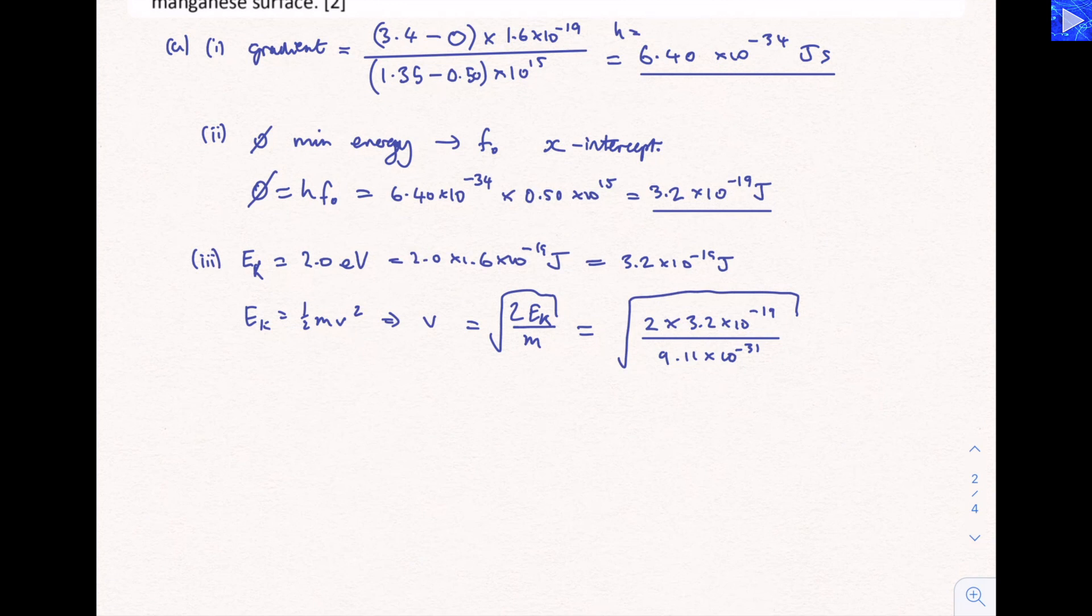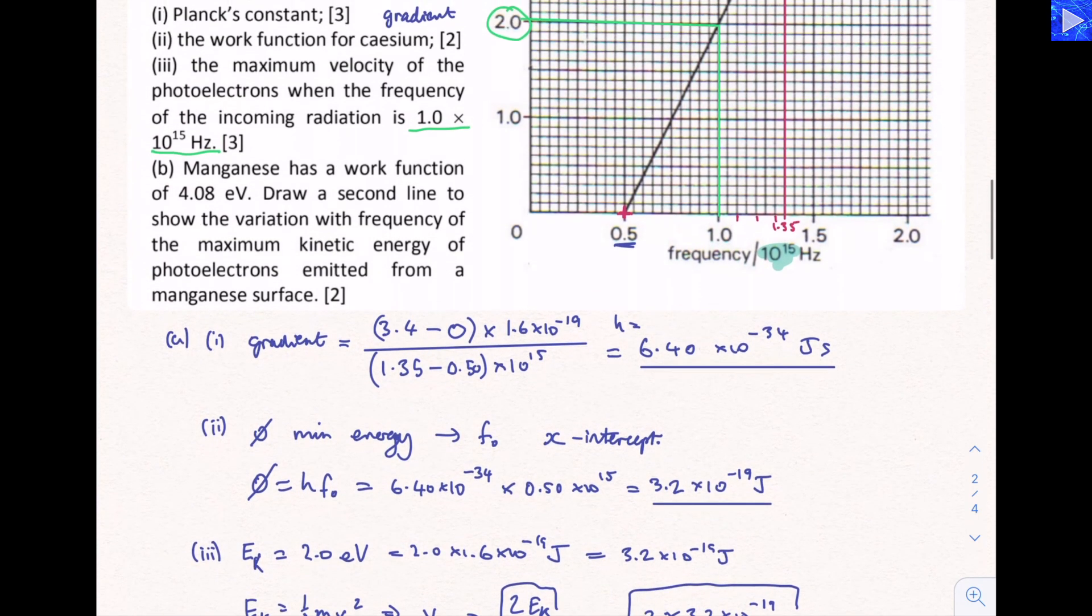So multiply those out, divide, square root, and we're going to get 8.382 times 10 to the 5 meters per second. So they come off there very fast. We should write that to the appropriate number of significant figures, so that'll be 2 again. So 8.4 times 10 to the 5 meters per second. That's part A done.